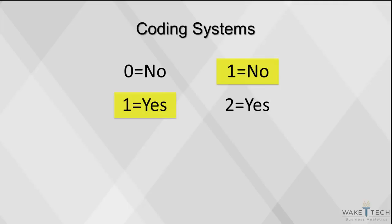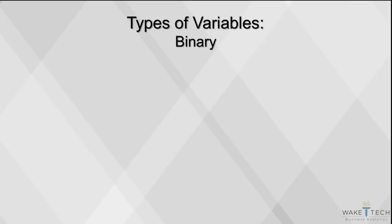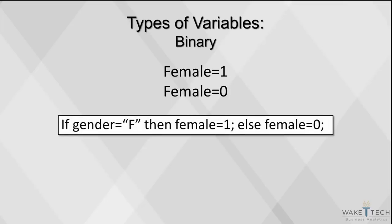A binary variable is any variable that is coded to have two levels. In SAS, data representing gender, coded as M or F, would be converted into a binary variable. For example, if we're asking about the number of years of education a person has, with a value of 1 for each year of education, that would mean anyone with more than 12 years of education has been to college.